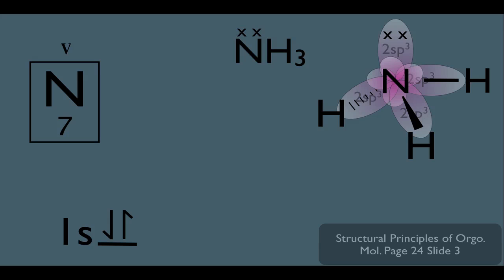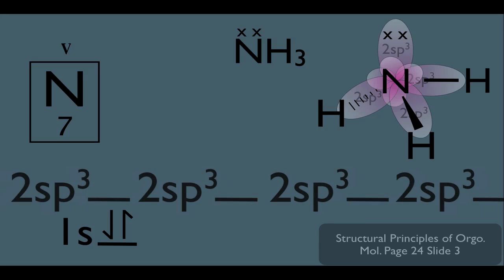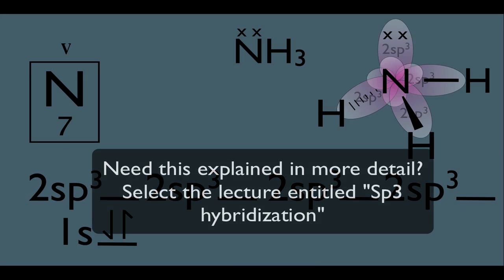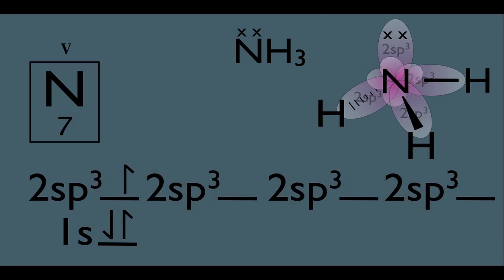We take an s and three p orbitals and hybridize them to make four sp3 hybridized orbitals. So to get a total of seven electrons, remember we have one, two in the 1s orbital. This would be three, this would be the fourth electron, we'd have the fifth one here, six, and the seventh one we'd then have to double up in one of the orbitals.